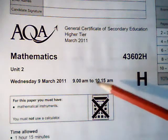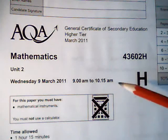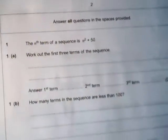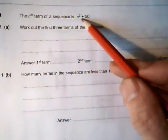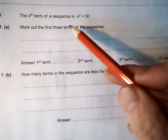This is the Edexcel Unit 2, 2011 paper, starting with question number 1. The nth term of the sequence is n squared plus 50. Work out the first three terms.